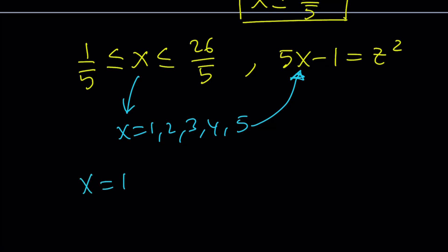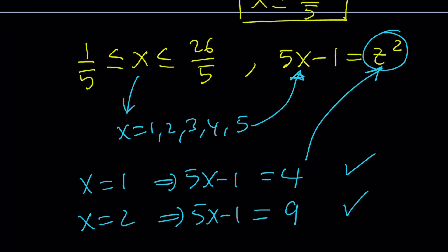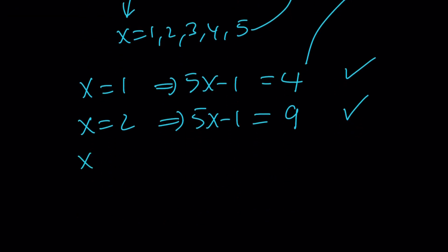If x is 1, then 5x minus 1 is equal to 4. Is 4 a perfect square? That's the type of question you need to ask. And the answer is yes. If x is equal to 2, 5x minus 1 is equal to 9. Is 9 a perfect square? Yes. Check. If x is equal to 3, then 5x minus 1 is going to be 14. Is that a perfect square? Nope.